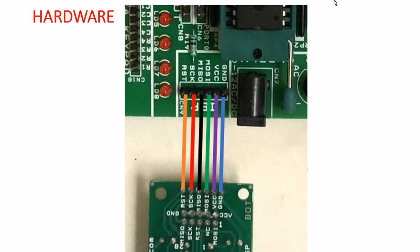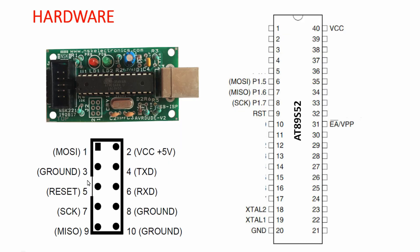If you don't have a development board, you can also build the circuit on a breadboard. The USBasp pin out requires: MOSI to pin 6, MISO to pin 7, Clock to pin 8, Reset to pin 9, VCC to pin 40, and Ground to pin 20. You also need an 11.0592 MHz crystal on pins 18 and 19, and pull the EA pin high to indicate use of the microcontroller's internal ROM.